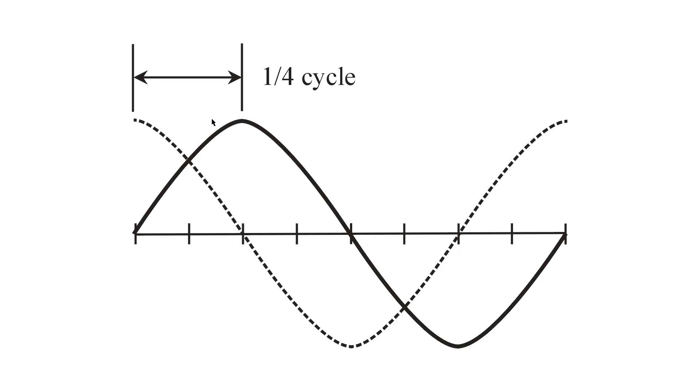90 degrees or a quarter of a cycle later, the solid wave manifests itself one quarter of a cycle later than the dashed wave.